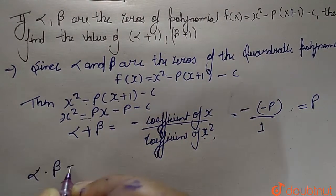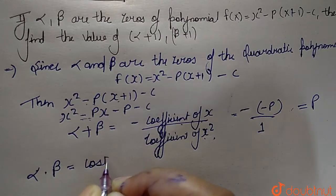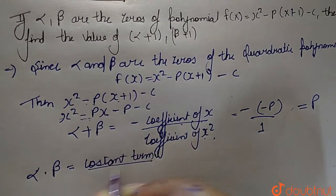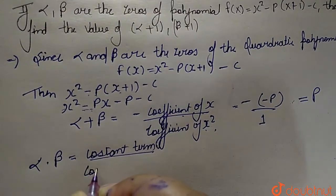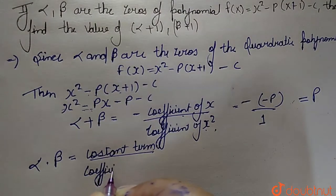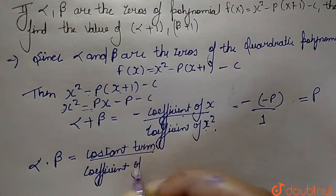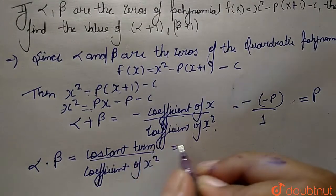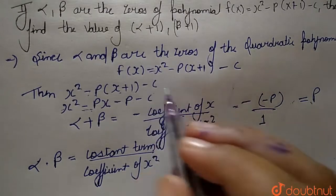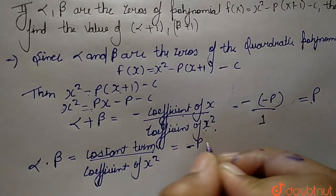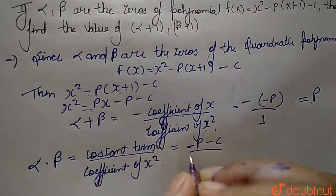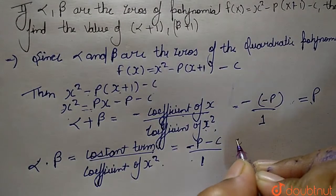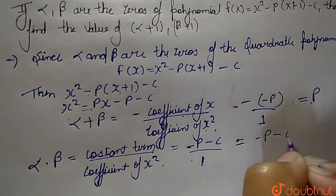For alpha multiplied with beta, this equals the constant term upon coefficient of x². The constant term we have is minus p minus c, and the coefficient of x² is 1. So alpha times beta equals minus p minus c.